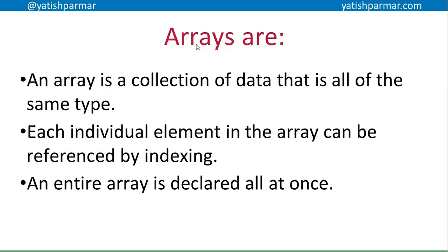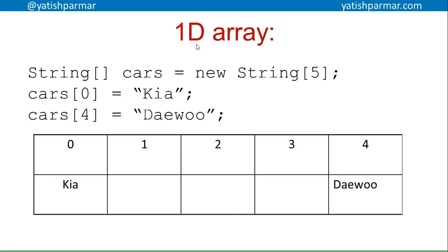You can predict the memory requirements of your application, unless your array is storing strings. Here's an example of a 1D array declared in Java: `String cars = new String[5]` — five elements. `cars[0]` equals 'Kia', so I've stored something in the first and last elements with a zero-based index. When the length is five, the final element is always index four, because the index is one less than the maximum.